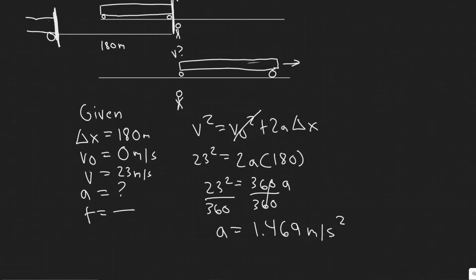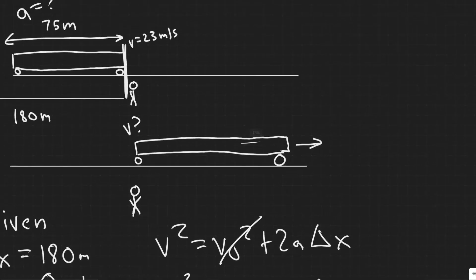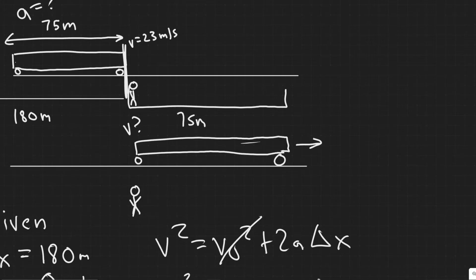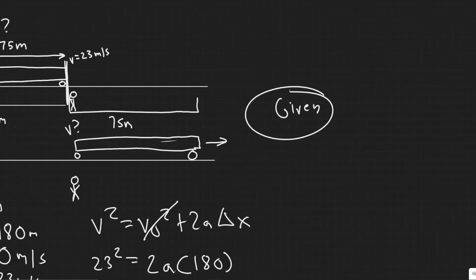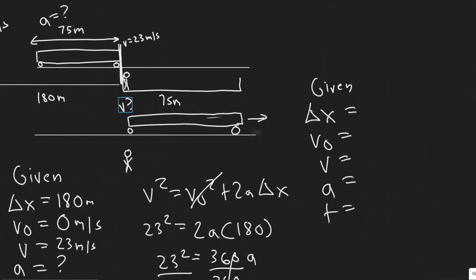Now I'll show you why we needed that acceleration. We need to solve a new interval: from when the front of the train is at the worker to when the back of the train reaches the worker — a distance of 75 meters, which is the length of the train. So we write out the kinematic variables for this new interval. Delta x is 75 meters.